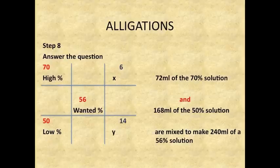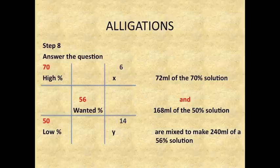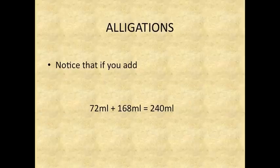Step 8: Answer the question. 72 ml of the 70 percent solution and 168 ml of the 50 percent solution are mixed to make 240 ml of a 56 percent solution. Notice that if you add 72 ml plus 168 ml, it equals 240 ml, which is your total volume.